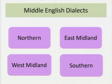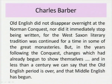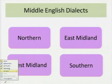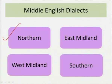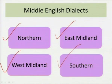As for Middle English dialects, many scholars say there are five dialects and some say four, but the important ones were the Northern dialect, the East Midland dialect, the West Midland dialect and the Southern dialect.